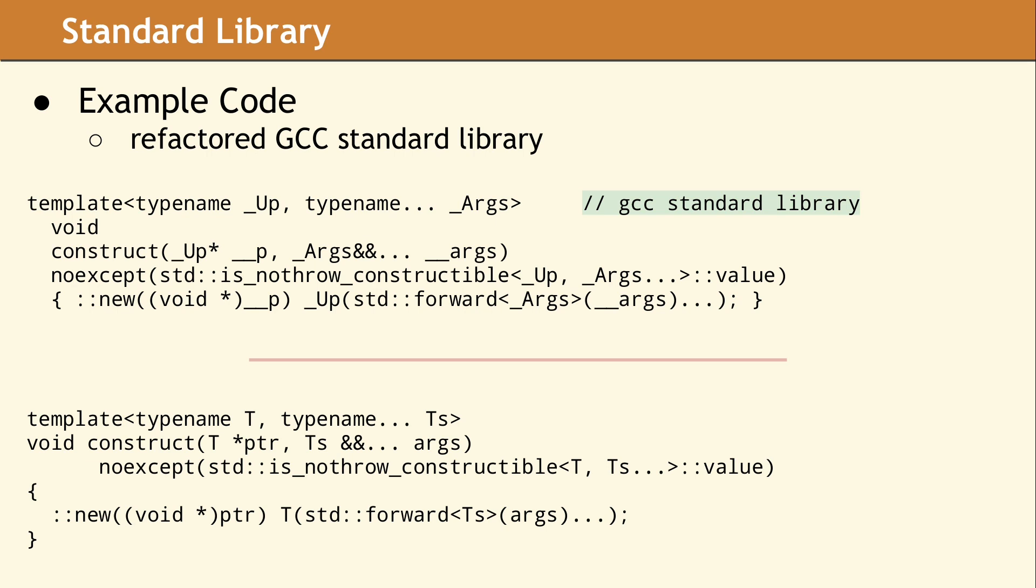On the other hand, there is a very good reason to change this identifier name. In their code, they used a template parameter named underscore args with an uppercase A, and a method parameter named underscore args with a lowercase A. This is confusing and will make conversations about the code difficult to follow.